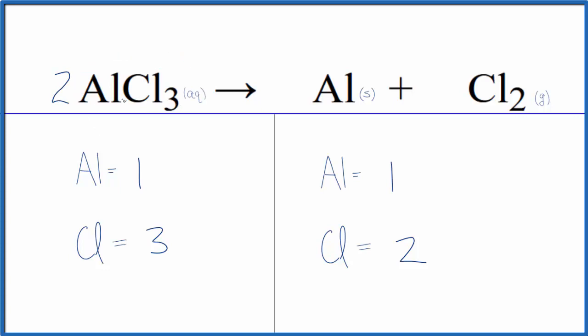In this two, it applies to everything. So we have one times two, that would give us two aluminums. Three times two, that would give us six of these chlorine atoms.